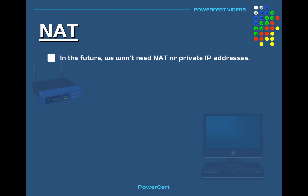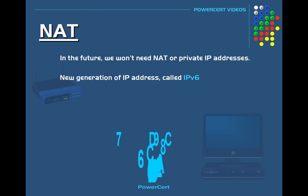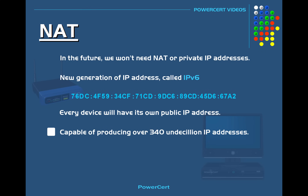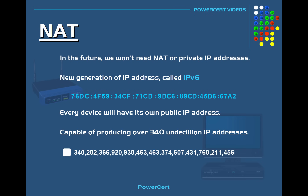In the future we won't need NAT or private IP addresses, because of the new generation of IP addressing called IP version 6. With IP version 6, every single device in the world will have its own public IP address, so there is no need for IP address translation. This is because IP version 6 is able to produce over 340 undecillion IP addresses — that's the number 340 with 36 digits after it — so we will never run out of IP addresses.